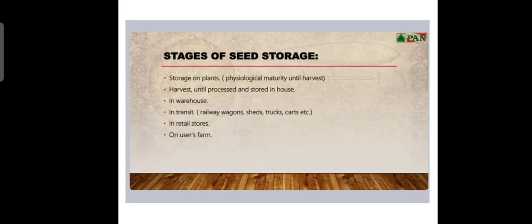Stages of seed storage: storage on plants - physiological maturity until harvest, harvest until processed and storage in house, in warehouse, in transit - examples include railway wagons, trucks, carts, etc., and in retail storage at the user's farm.